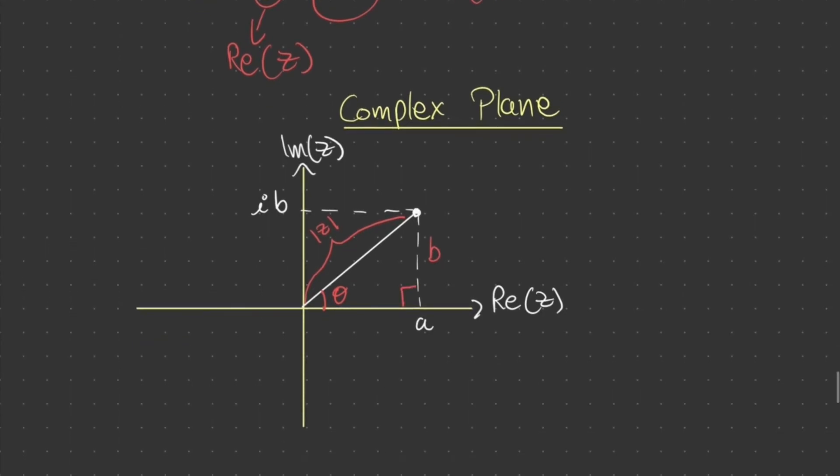And therefore, when we try to find the length of z, we can use Pythagoras theorem. We're simply trying to find the hypotenuse, which is equal to a squared plus b squared. And remember, we can use trigonometry to find the angle as well. Tan theta is equal to b on a, which can be written as theta is equal to tan inverse b on a.